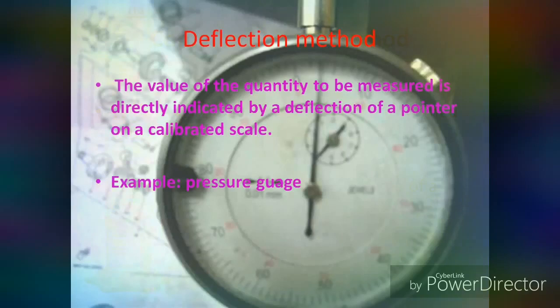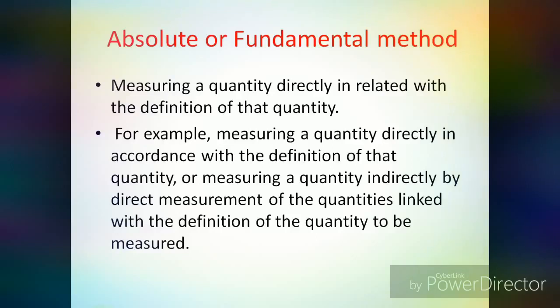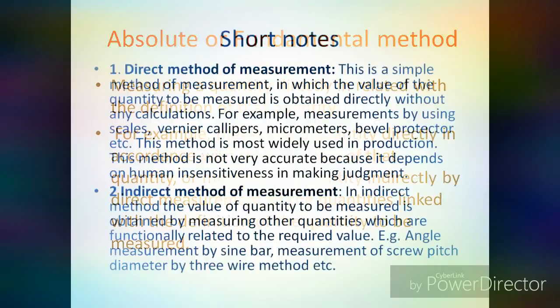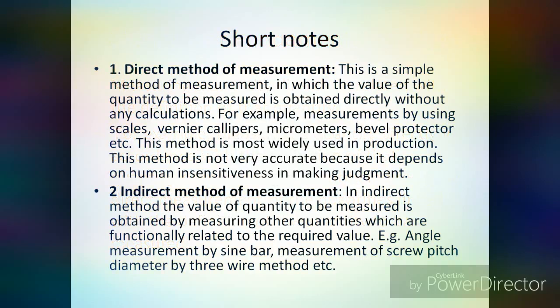The next is the Deflection Method. The value of the quantity to be measured is directly indicated by a deflection of a pointer on a calibrated scale. Example: pressure gauge. Last is the Absolute or Fundamental Method. It is based on the measurement of the base quantities used to define the quantity — for example, measuring a quantity directly in accordance with its definition, or measuring it indirectly by direct measurement of a quantity linked with the definition. I have also provided short notes for each heading. Hope this will be useful for your examination.